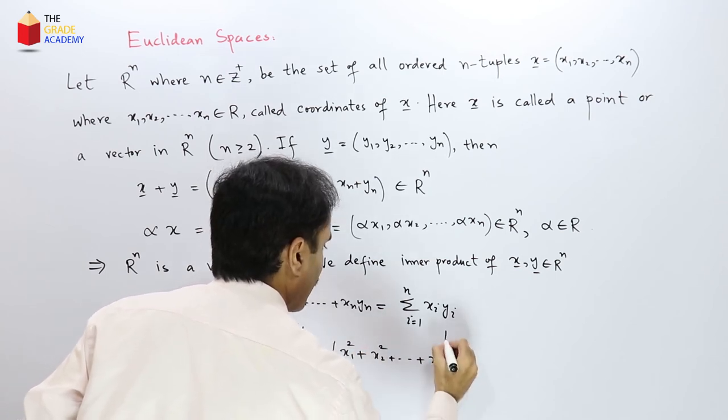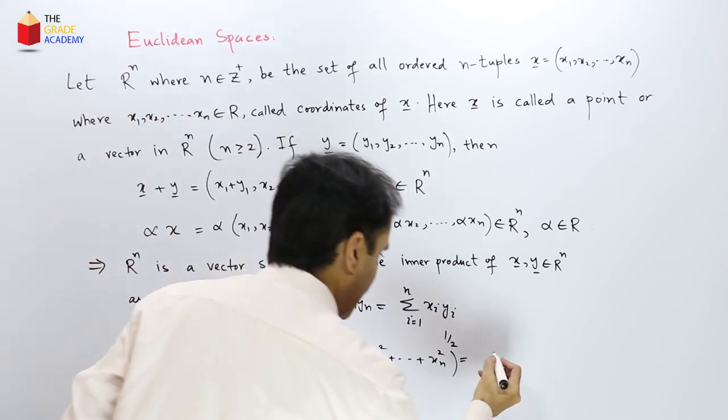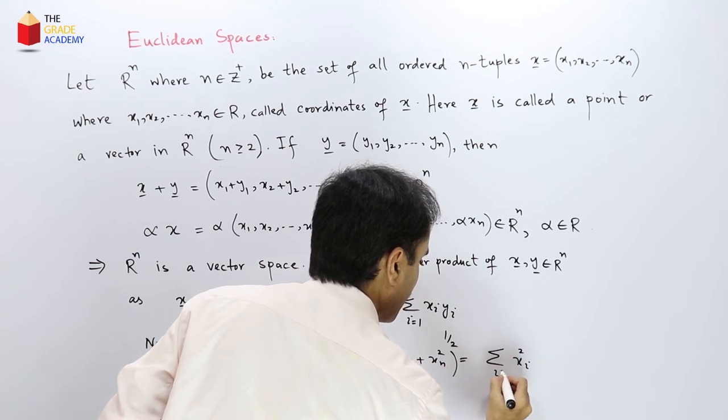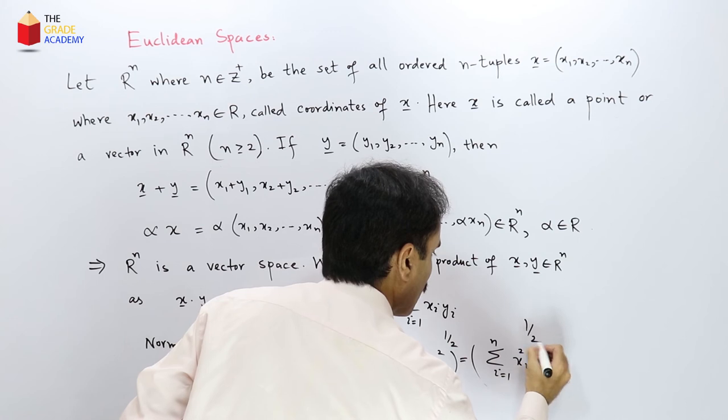So here to the power 1 by 2. So we can also write it in sigma notation as sigma xi squared where i goes from 1 to n to the power 1 by 2.